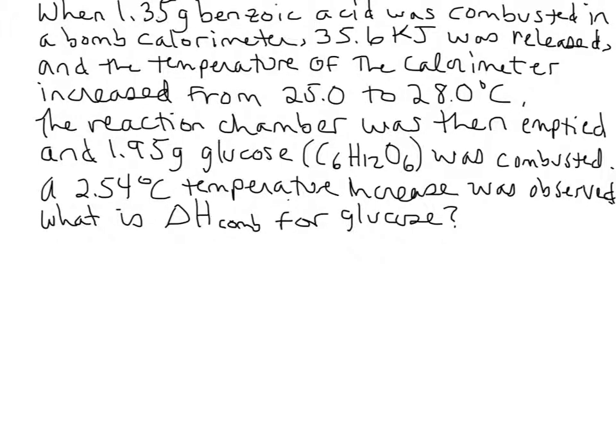Here's a typical bomb calorimetry problem. When we combust 1.35 grams of benzoic acid in a bomb calorimeter, 35.6 kilojoules of energy in the form of heat was released, and the temperature of the calorimeter increased from 25.0 to 28.0 degrees C. The reaction chamber was then emptied, and 1.95 grams of glucose was burned inside. During this process, a 2.54 degree C temperature increase was observed. So what is the enthalpy of combustion for glucose?